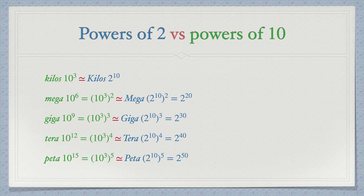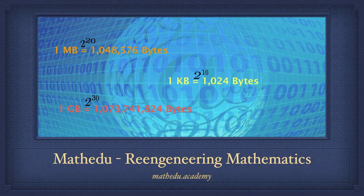Peta is 10 to the power 15, that is 10 to the power 3 to the power 5, which is not far from 2 to the power 50. So this is the explanation of why a kilobyte is 1024 bytes rather than 1000. Do not hesitate to subscribe to our channel of practical mathematics and to visit our website mathedu.academy.